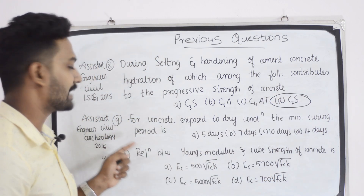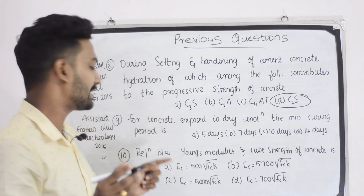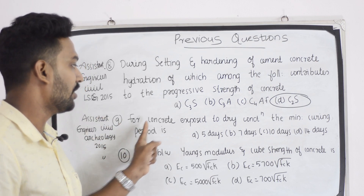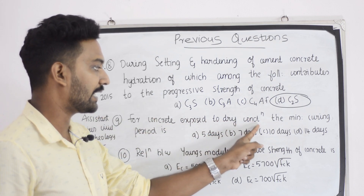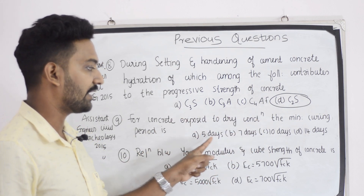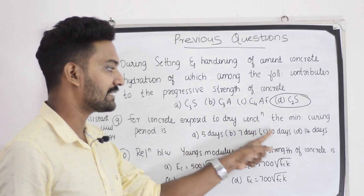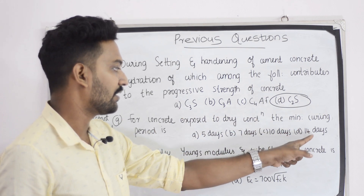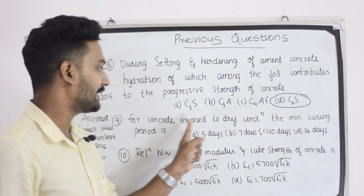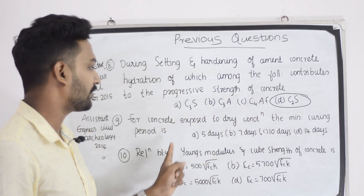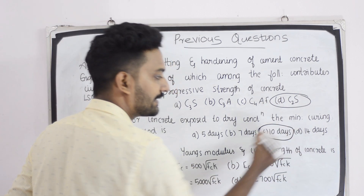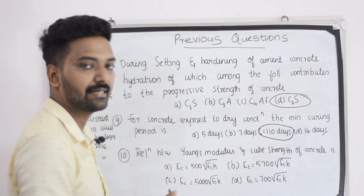Next question — assistant engineer, civil: for concrete exposed to dry condition, the minimum curing period is — option 5 days, 7 days, 10 days, and 14 days. The answer is 10 days.